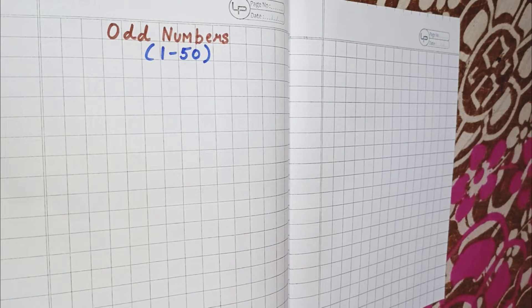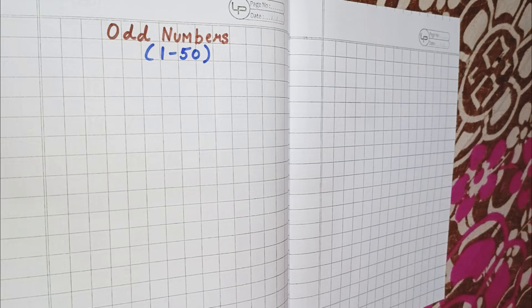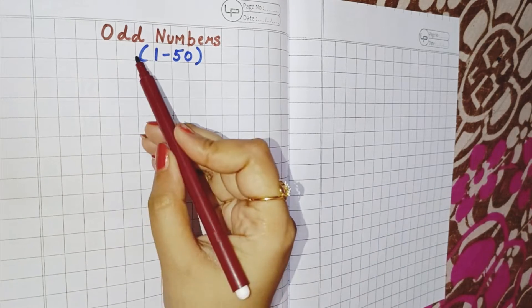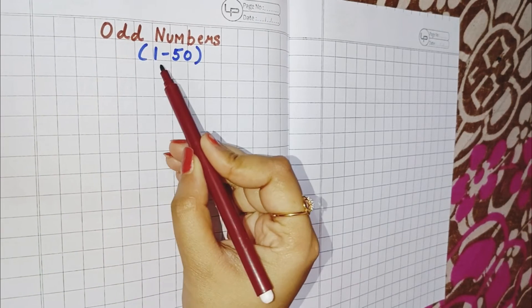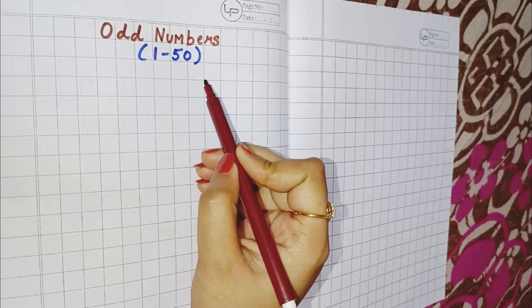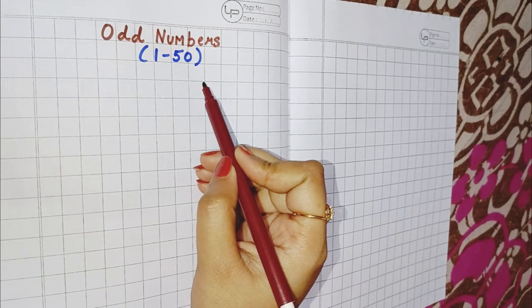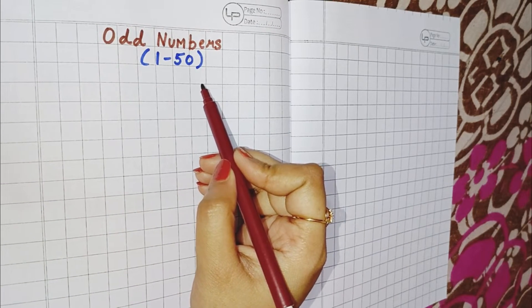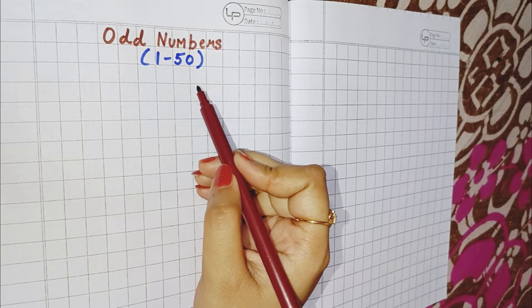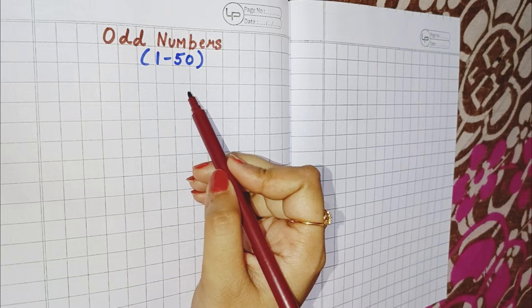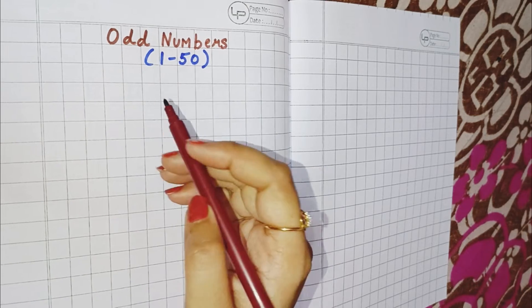Hello kids, how are you all? I hope you all are fine. Today we will learn odd numbers from 1 to 50. So are you all ready? Very good. So let's begin.